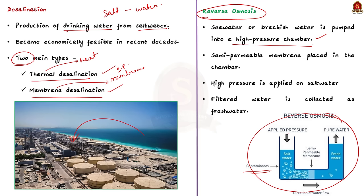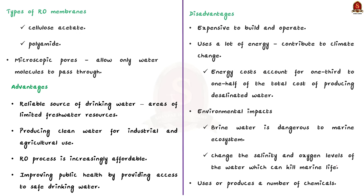There is a semi-permeable membrane placed in the chamber. High pressure is applied on the seawater and it forces water molecules to pass through the membrane, thereby leaving the salt molecules behind. The filtered water is collected as fresh water. The most common types of RO membranes used in desalination plants are cellulose acetate and polyamide. The microscopic pores in the membranes allow only water molecules to pass through and not any impurities, helping in producing clean drinking water.